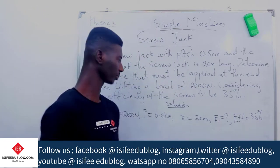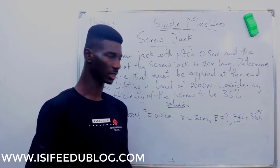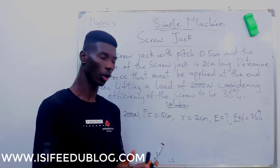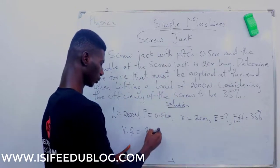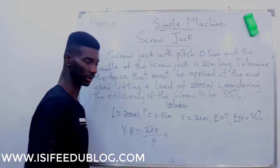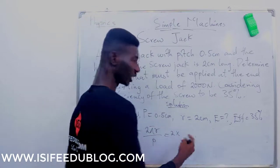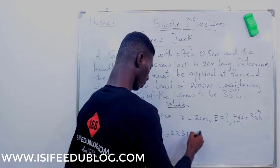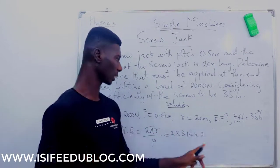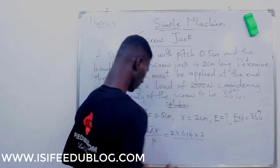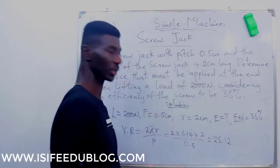So efficiency is 35%. From the formula, efficiency = (mechanical advantage / velocity ratio) × 100%. We need both mechanical advantage and velocity ratio. The velocity ratio for a screw jack is 2πr / pitch. So: VR = (2 × 3.14 × 2) / 0.5 — the units are the same so no conversion needed — which gives us 25.12.